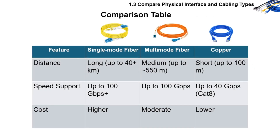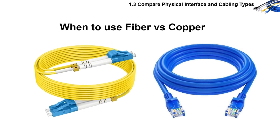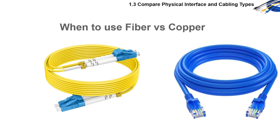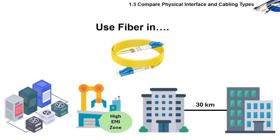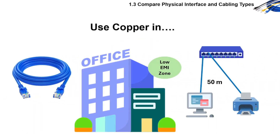Here's a comparison table to summarize the differences of single-mode fiber, multi-mode fiber, and copper cables. You use fiber in data centers, industrial environments, or between buildings for long distance with high EMI zones. While you use copper in standard office spaces for shorter, budget-friendly connections where EMI is low.